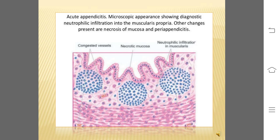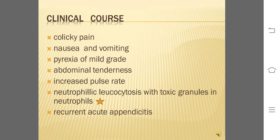In either case, an impacted foreign body, fecalith, or concretion may be seen in the lumen. The patient presents with features of acute abdomen: colicky pain initially around the umbilicus but later localized to the right iliac fossa, nausea and vomiting, mild-grade pyrexia, abdominal tenderness, increased pulse rate, and neutrophilic leukocytosis with toxic granules in neutrophils as the most significant laboratory finding. An attack of acute appendicitis predisposes to repeated attacks called recurrent acute appendicitis, and thus surgery has to be carried out. If appendectomy is done at a later stage, pathological changes of healing by fibrosis of the wall and chronic inflammation are observed.